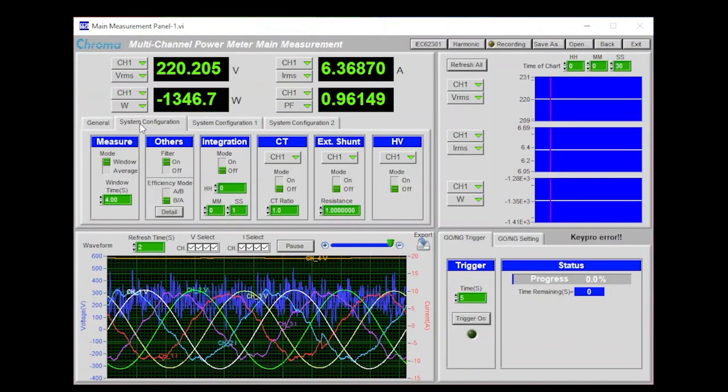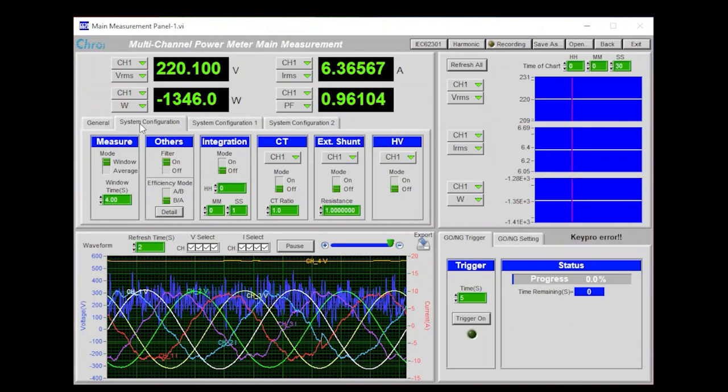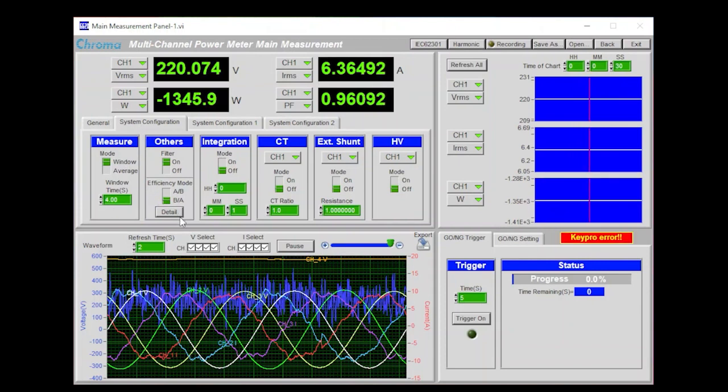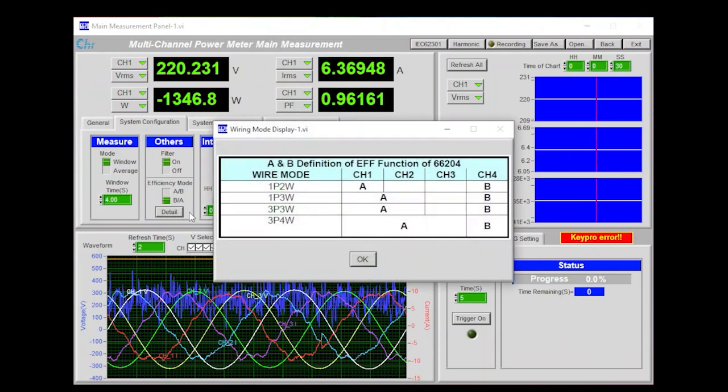Under System Configuration, we have additional settings. Under Measure, we can set the sampling method for the power meter. We can set the digital filter and the efficiency mode. Actually, if we click on the Detail button, it gives us a description window.